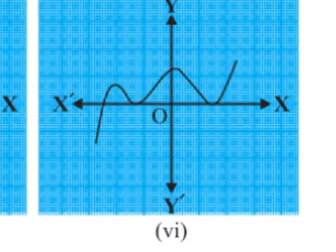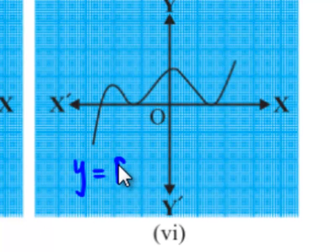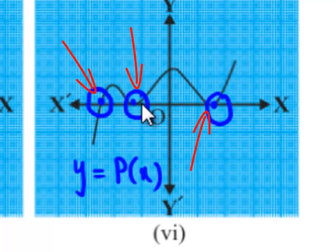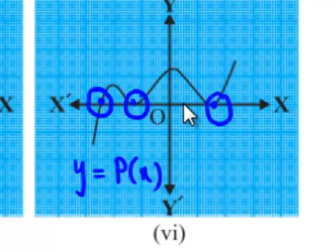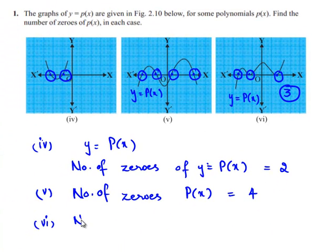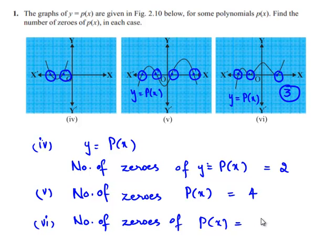Coming to the sixth case, the graph y is equal to p of x is intersecting the x-axis at this point, this point, and this point. So the number of points at which the polynomial y is equal to p of x intersects the x-axis is 3. So we can say that the number of zeros of the polynomial p of x is equal to 3, as it is intersecting the x-axis at three points.